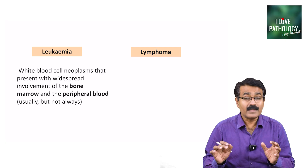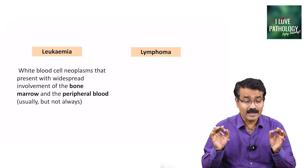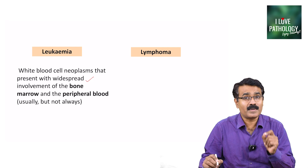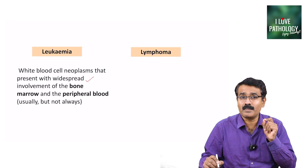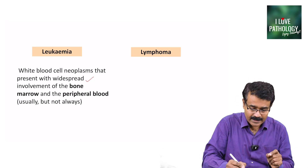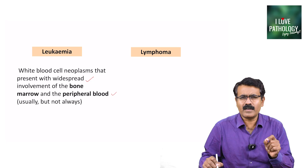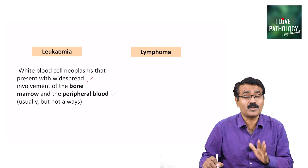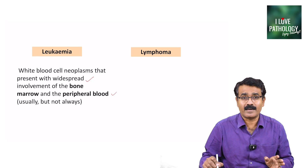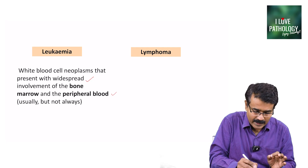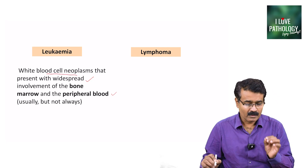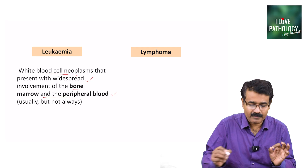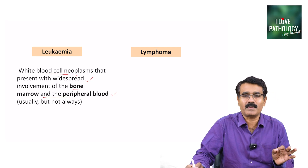Leukemia — these are white blood cell neoplasms which present with the widespread involvement of the bone marrow as well as the peripheral blood. Peripheral blood involvement is usually seen, but it is not necessarily always present. So leukemia is a white blood cell neoplasm with widespread involvement of bone marrow and peripheral blood.